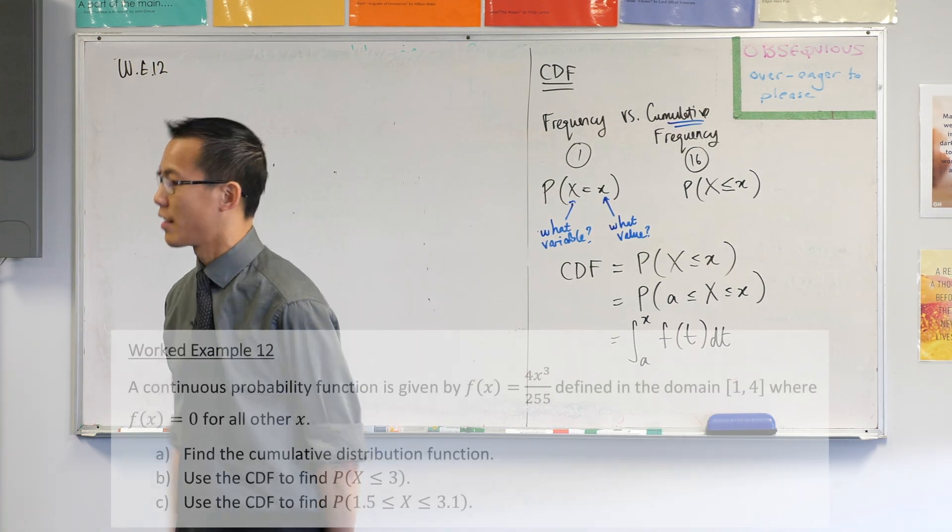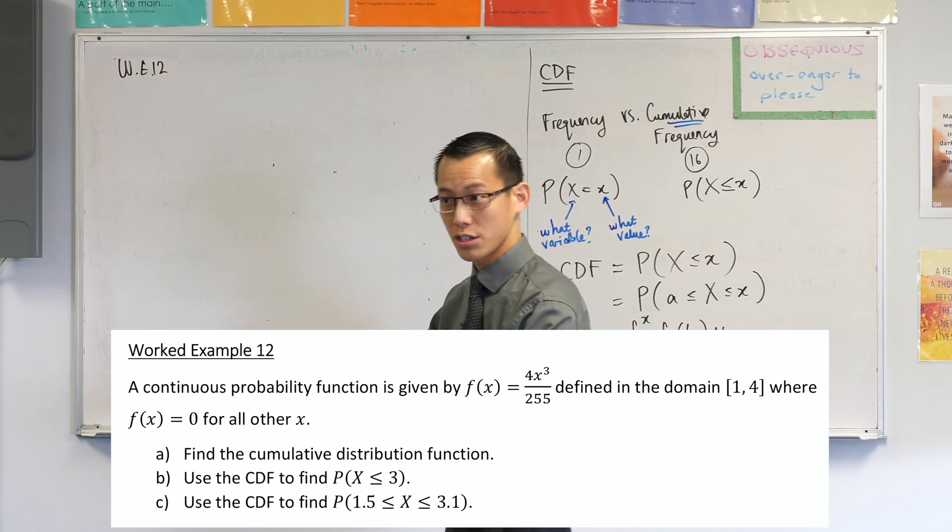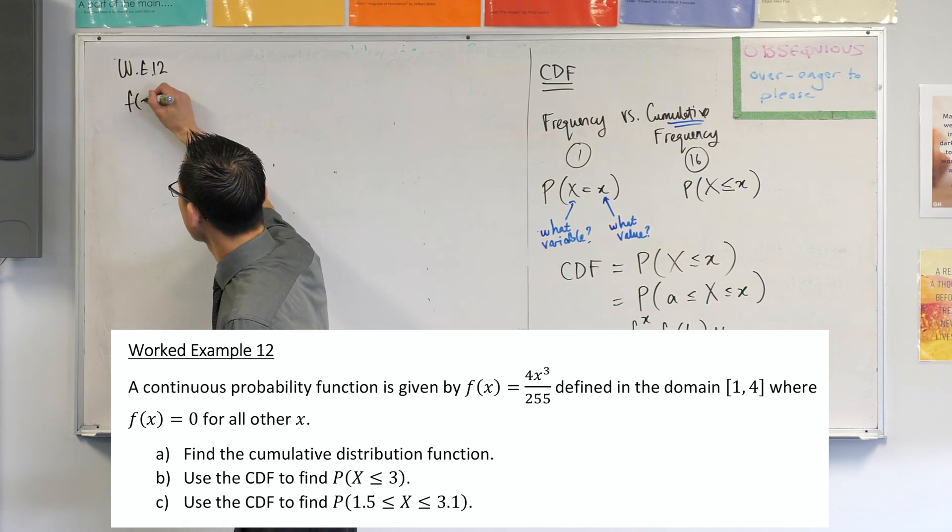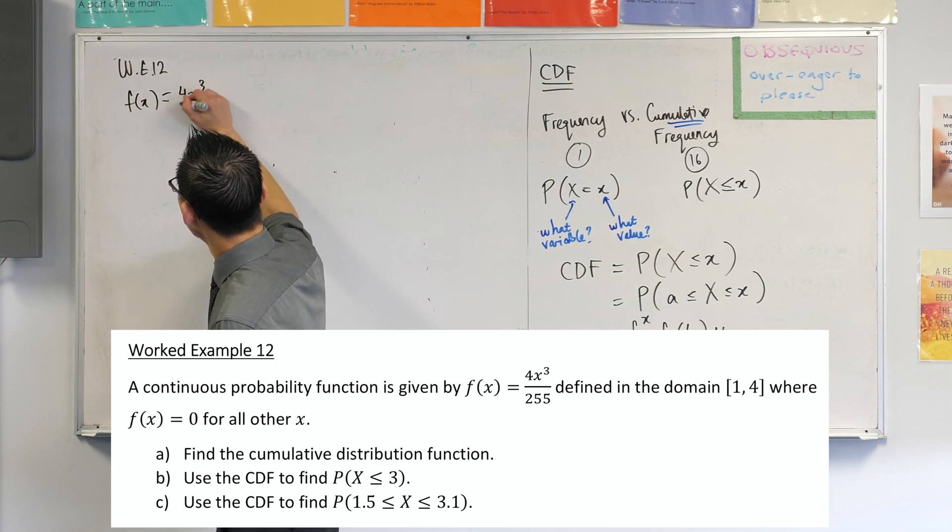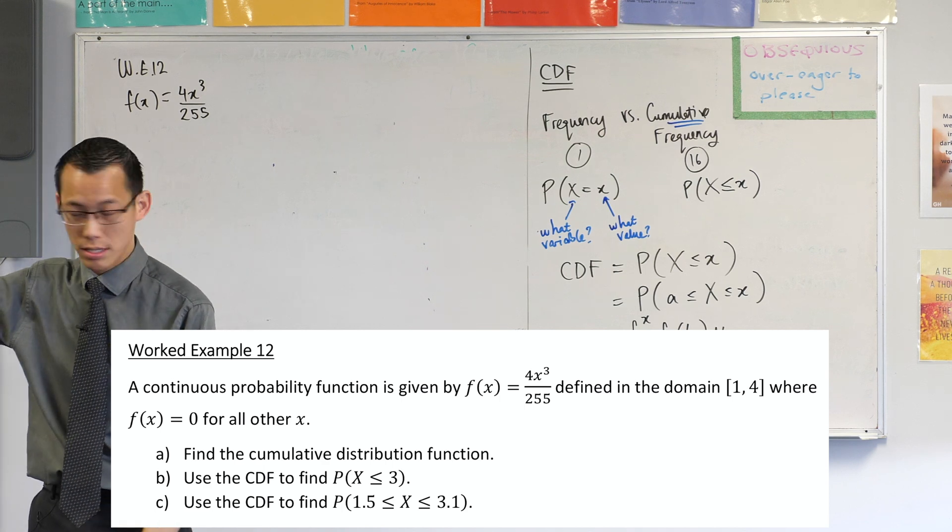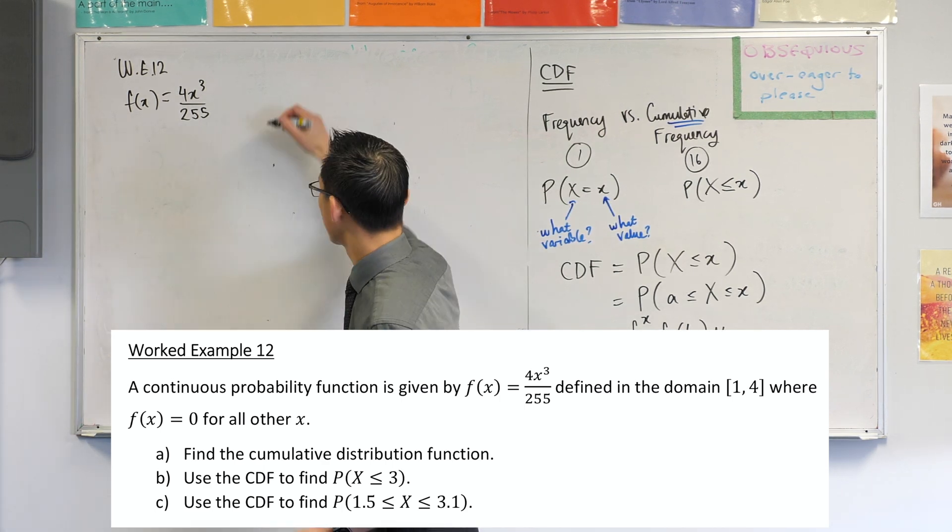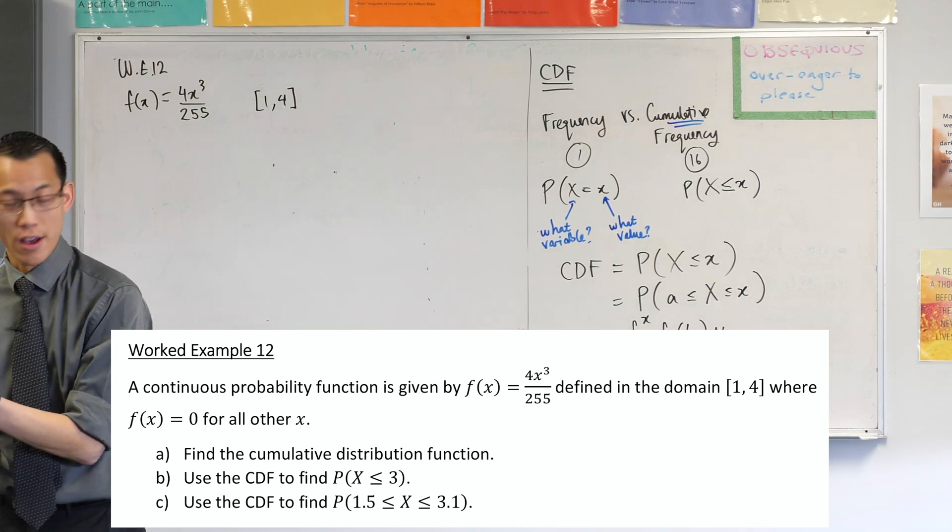A continuous probability function is given by, let me give you a function here. f of x equals 4x cubed on 255, defined in a certain domain from 1 to 4. And then it's 0 everywhere else.